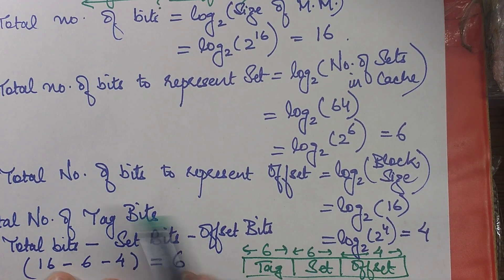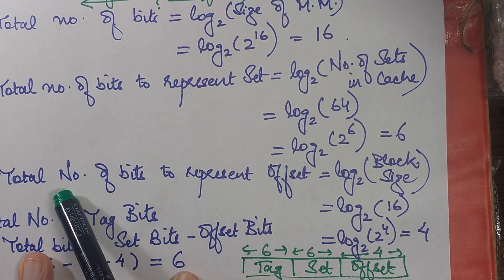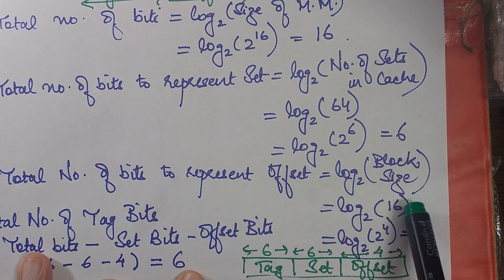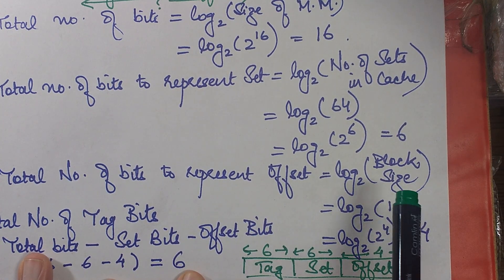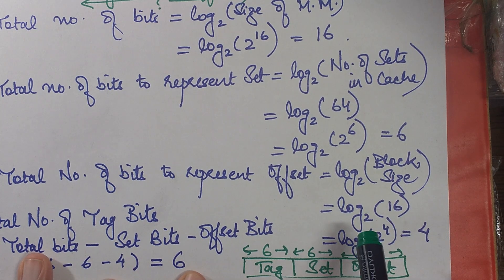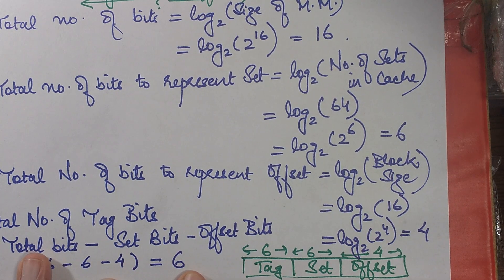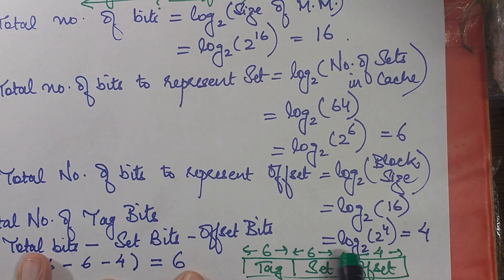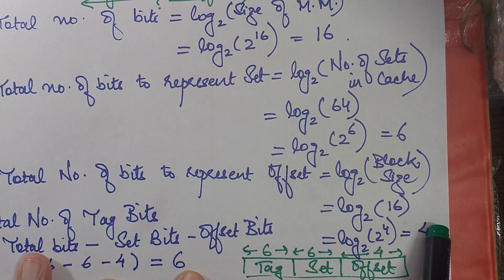Then the final thing is the offset bits. The total number of bits to represent offset is log 2 of block size. The block size was given to be 16 words. So what we consider over here is that the entire memory is word addressable. So log 2 of 16, which is log 2 of 2 to the power 4, which is 4.